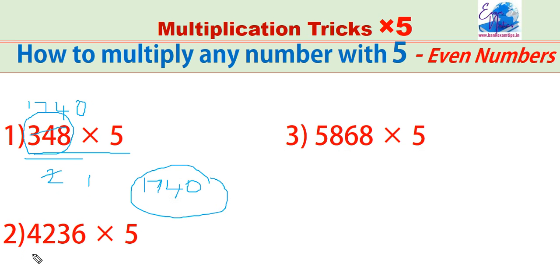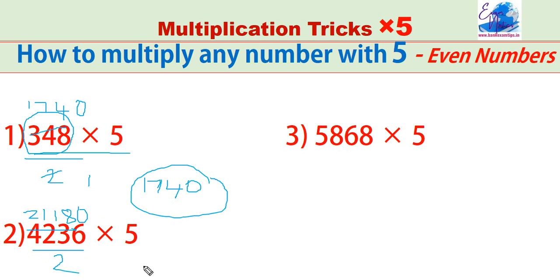See one more example. 4236 into 5. Make it half: 2118. And put 0 at the end. 21,180 is the answer.